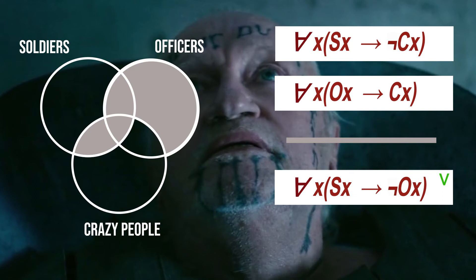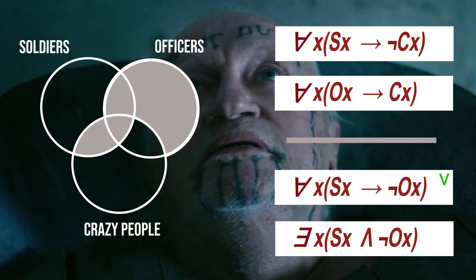Note that this conclusion is true even if there exist no soldiers at all. This brings us to our second tentative conclusion: some soldier is not an officer. Since the space of crazy soldiers who are not officers is crossed out, for this conclusion to be true there needs to be a sane soldier who is not an officer. But the premises provide no information as to whether this space is empty or not. In a situation where no soldiers exist, the argument becomes invalid. Note that one may tend to think the second conclusion follows from the first, but we have just proven that the second argument is invalid. Indeed, in predicate logic, it does not follow from the truth of 'all A are B' that there exists some A that is B.